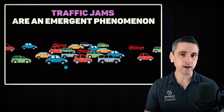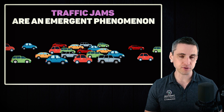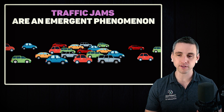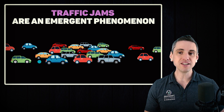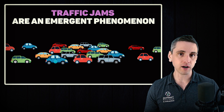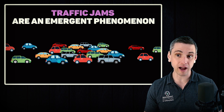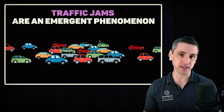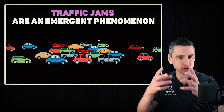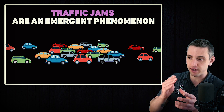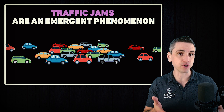Each individual car is following its own set of rules — it has to go the speed limit, slow down when the car in front of it slows down, stay in its lane. So each individual car is actually trying its best not to cause traffic, and yet traffic happens. And sometimes it's inexplicable why traffic happens right here on this road, but then half a mile up the road it's fine, even though there's no accident.